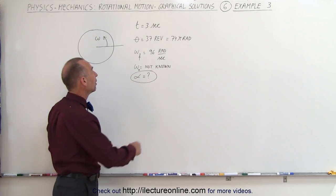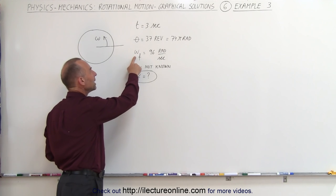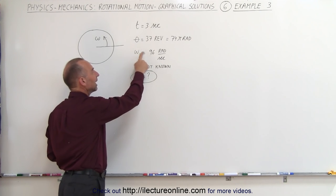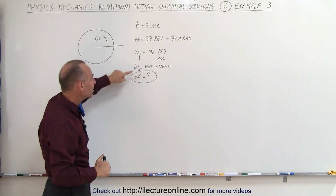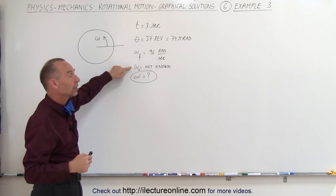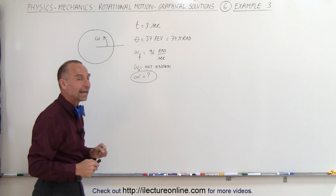During that three seconds it covered a total angular distance of 37 revolutions which is 74π radians. We had to convert to radians because we were given the final omega, the final angular velocity, as 96 radians per second. They did not tell us what the initial omega was, the initial angular velocity, and they want to know the angular acceleration.